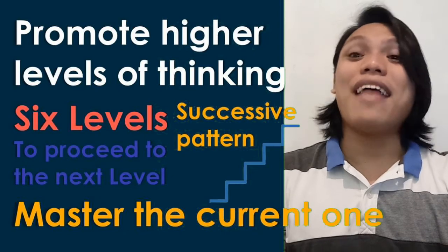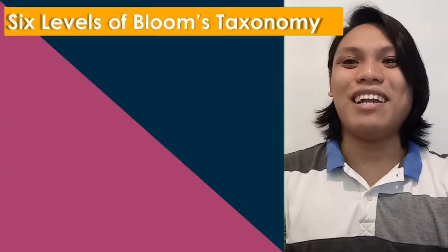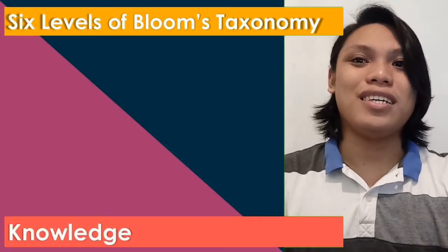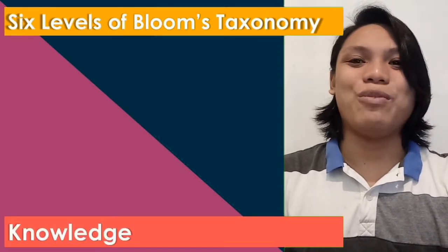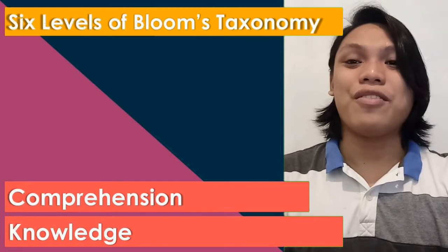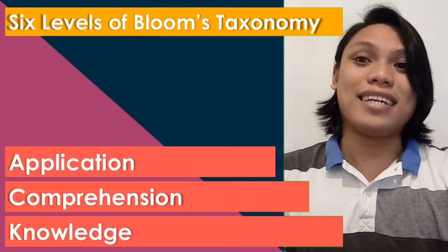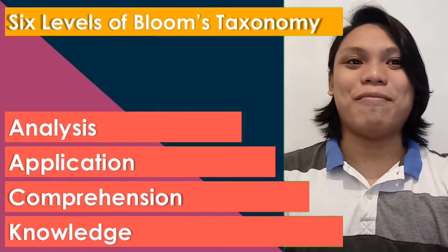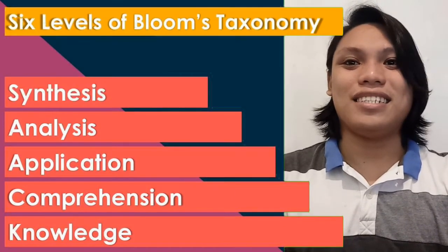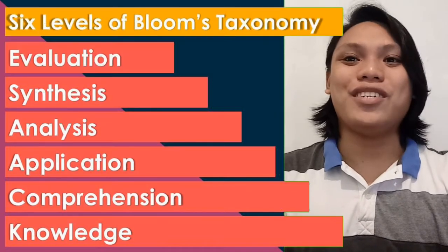And these are the 6 levels of Bloom's Taxonomy. The first one is Knowledge. The second one is Comprehension. The third one is Application. Next is Analysis. Next one is Synthesis. And the last one is Evaluation.